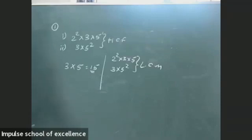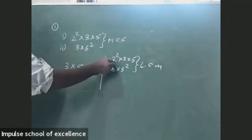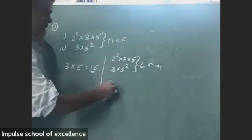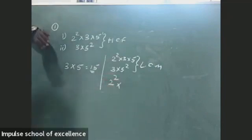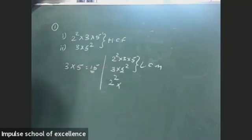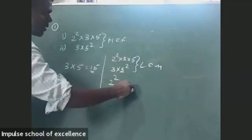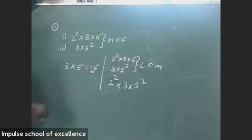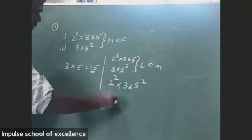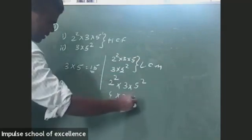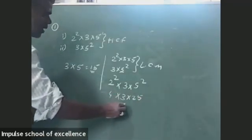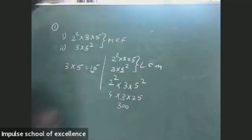What we can do here is consider 2 as a term. For LCM calculate: 2² is nothing but 4, into 3, into 5² which is 25. So 4 × 25 = 100, and 100 × 3 = 300. So 300 is the LCM of these given values.